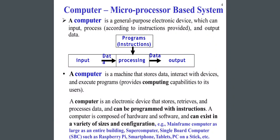A computer is a machine that stores data, interacts with devices, executes programs, and provides computing capabilities to its users. It is an electronic device that stores, drives, and processes data, and can be programmed with instructions. A computer is composed of hardware and software and can exist in a variety of sizes and configurations, such as mainframe computers as large as an entire building, supercomputers, single board computers (SBC) such as Raspberry Pi, smartphones, tablets, PC-on-a-stick, and more.